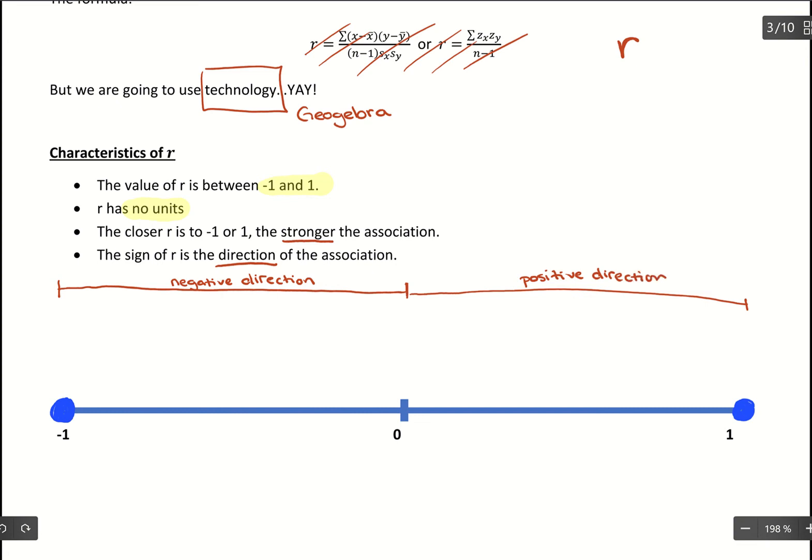If we are at exactly 0, then for direction that's the case of neither. In fact, if we get r equals 0, that means if we make a scatter plot, it's just going to be a blob. There's no trend to it, no direction, no strength, just nothing.